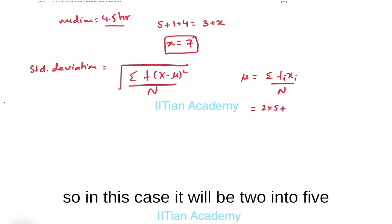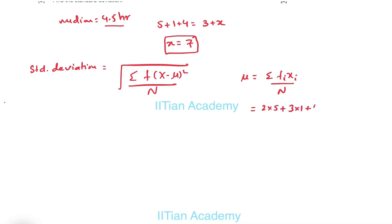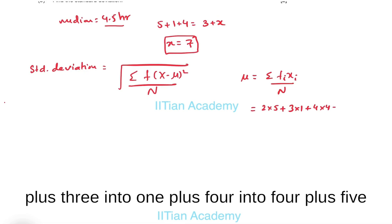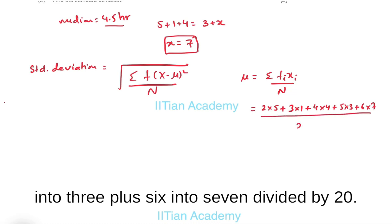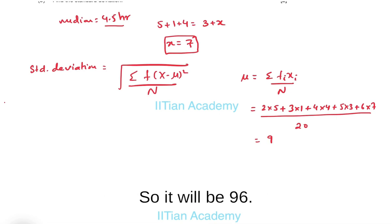So in this case it will be 2 into 5 plus 3 into 1 plus 4 into 4 plus 5 into 3 plus 6 into 7 divided by 20.